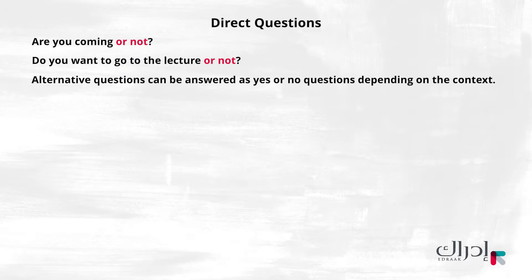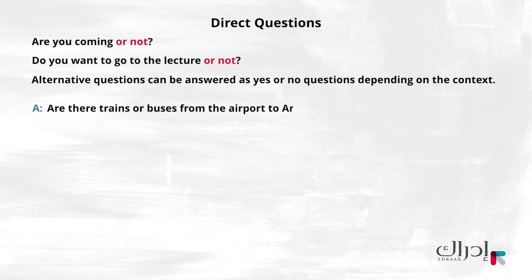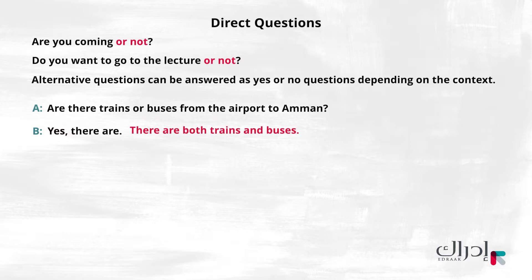Alternative questions can be answered as yes or no questions depending on the context. A: Are there trains or buses from the airport to Amman? B: Yes, there are. There are both trains and buses. Or, there's a train, there's a bus.